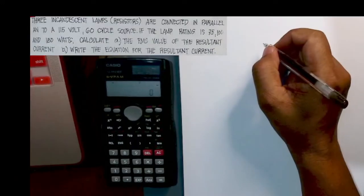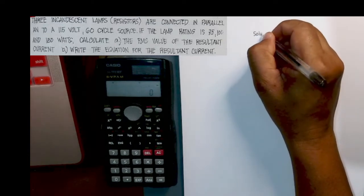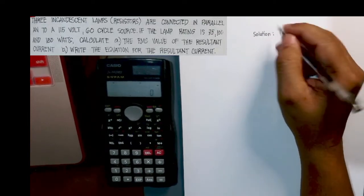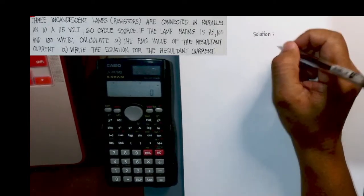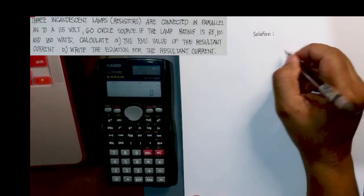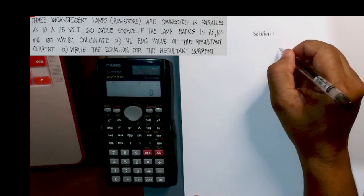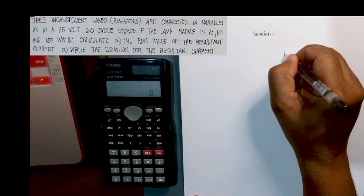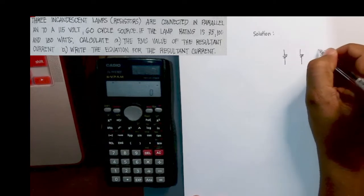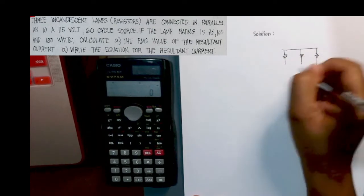To be able for us to understand the problem, let me just represent the problem into a circuit diagram. So there were three incandescent lamps connected in parallel. The symbol that we are going to use is a resistor for incandescent lamps. So this is one, another one here, another one. These are connected in parallel.